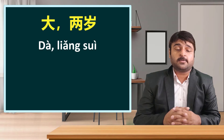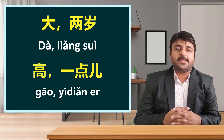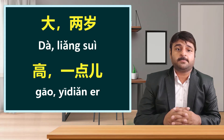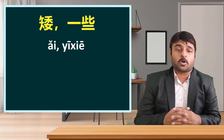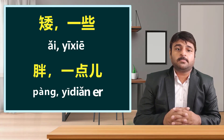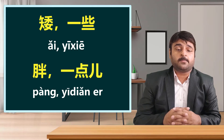Compared to younger brother, younger sister is older by two years. Next set: 'Kao' is taller, 'i tiyanar' means a bit. So younger sister is taller than younger brother by a bit or slightly. 'I' — she is short a bit — younger sister is shorter than younger brother slightly.